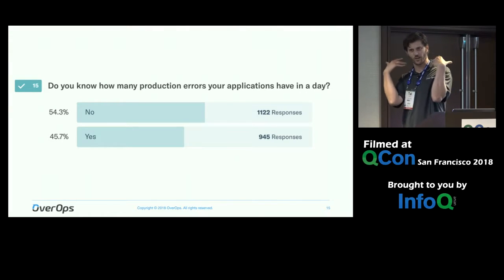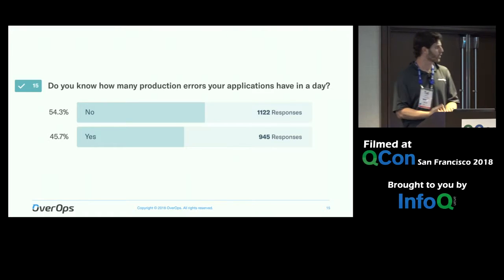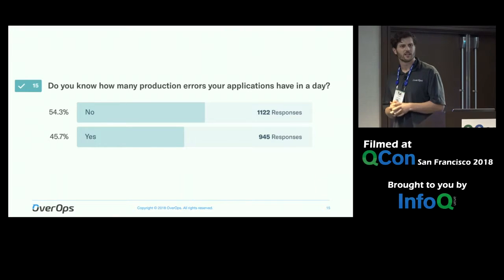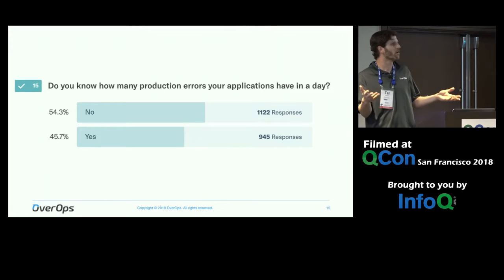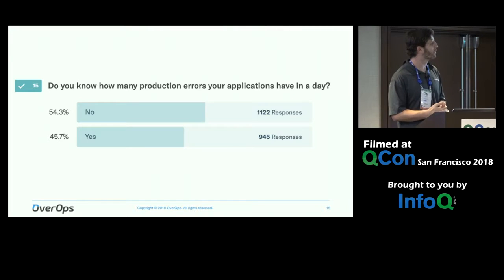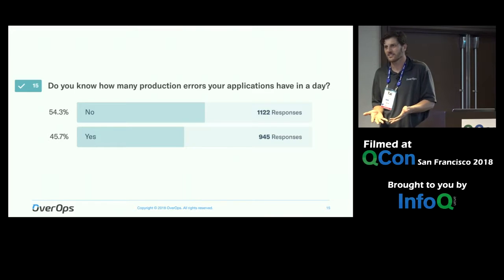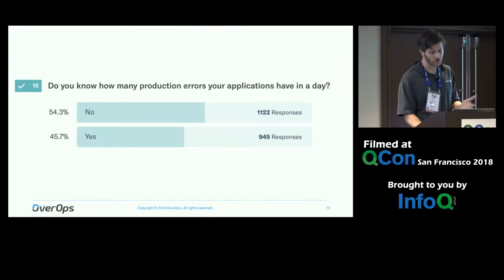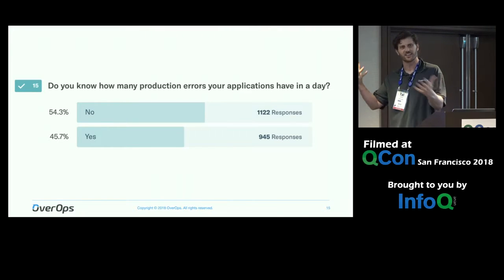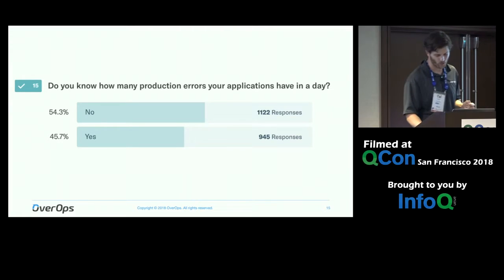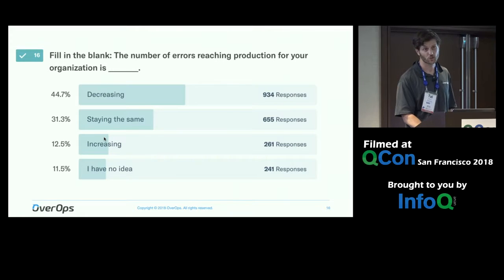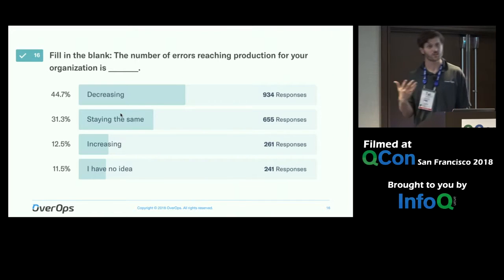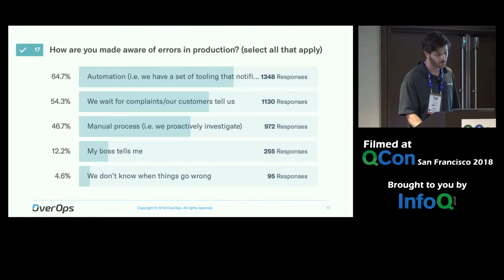Here's a question for you: for those tasked with working on an application that is serving customers, do you actually know how many errors you have in production going from benign to medium to severe every day? Can you ballpark it? Is it a million? A thousand? 50,000? Most people say they would know, but another interesting survey would be to compare those answers to what's actually happening in the application — I'm betting on pretty large standard deviations.